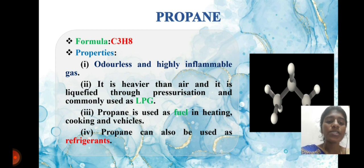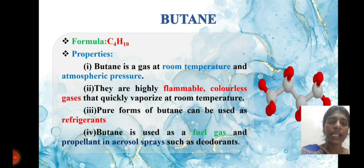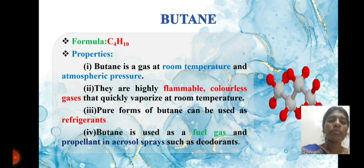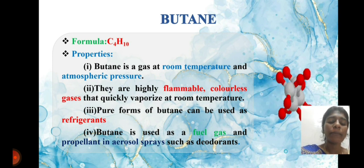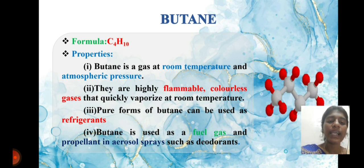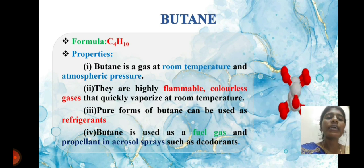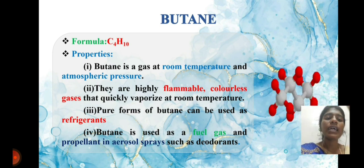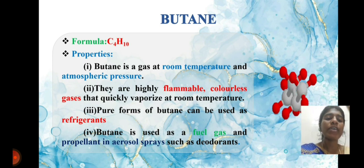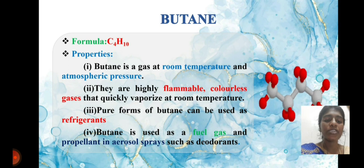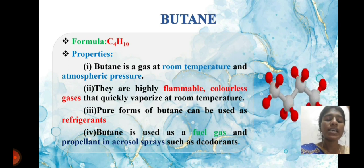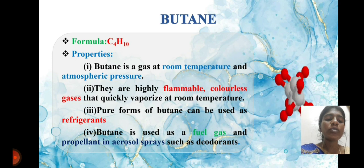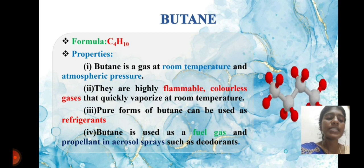Butane: the formula for butane is C4H10. Butane is a gas at room temperature and atmospheric pressure — a flammable, colorless gas that quickly evaporates at room temperature. The pure form of butane can be used as a refrigerant, and butane is also used as a fuel gas.